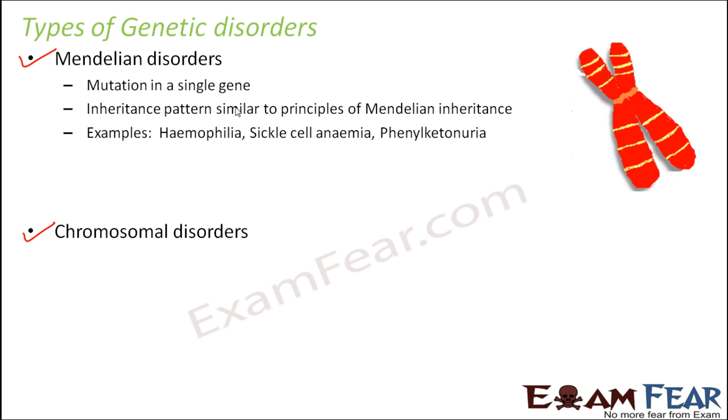Some examples of Mendelian disorders are hemophilia, sickle cell anemia, and phenylketonuria.